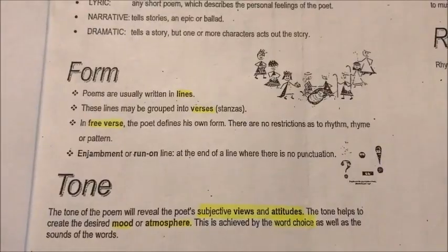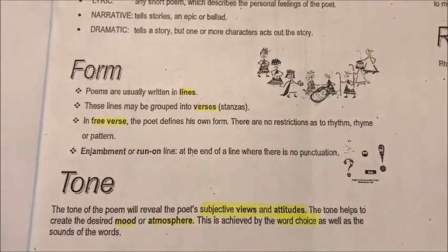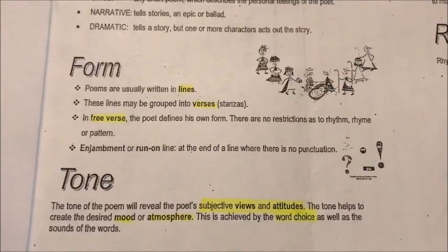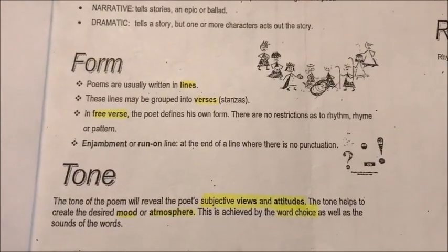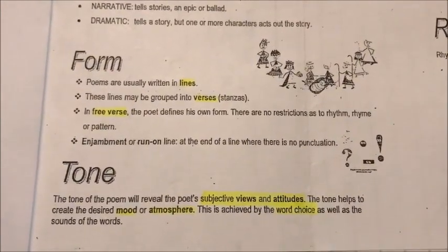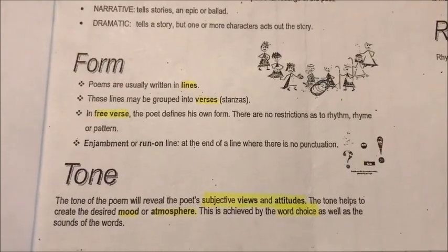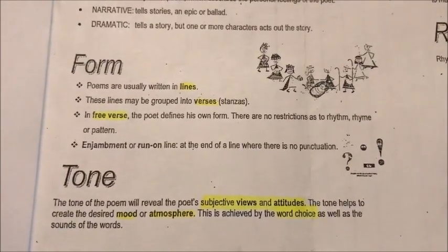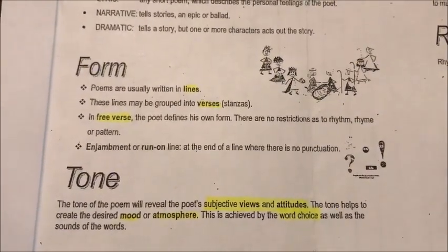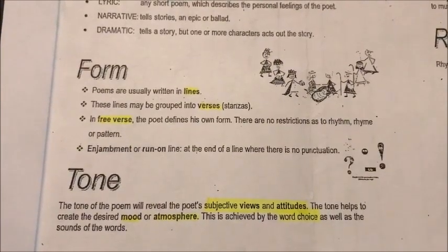Next we'll look at form. A poem is usually written in lines that are grouped into verses or stanzas. In a free verse — a freie vers — the poet defines his own form. There are no restrictions as to rhyme, rhythm or pattern.